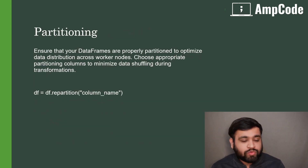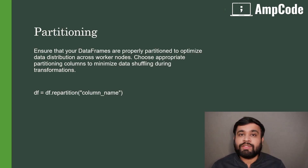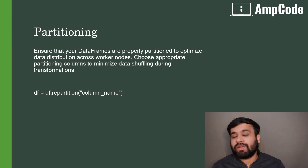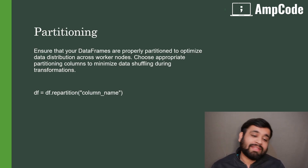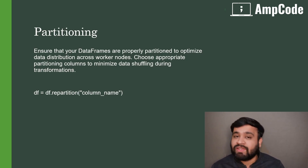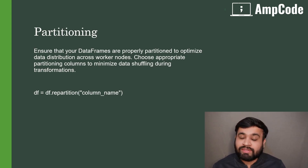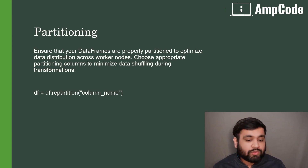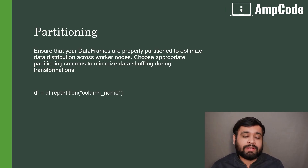The next technique is partitioning. As the name suggests, partitioning means splitting your DataFrame into multiple parts, stored distributed across your worker nodes. You have to ensure that your DataFrames are properly partitioned for optimizing data distribution. You need to choose the right partitioning column — for example, if you have data on a monthly basis, you can partition by month, but you must ensure data is equally distributed across partitions to minimize shuffling during the transformation phase.